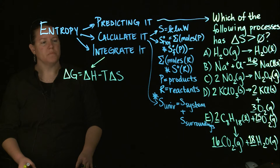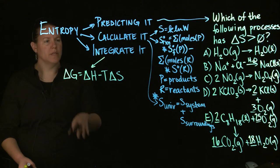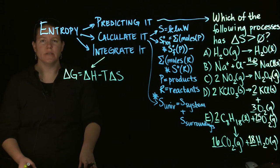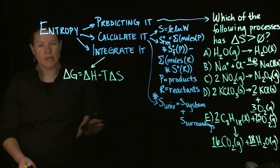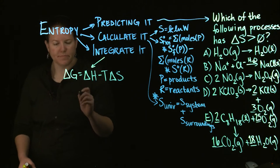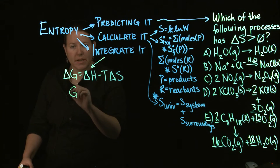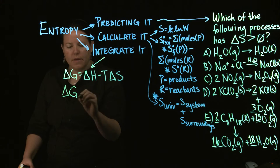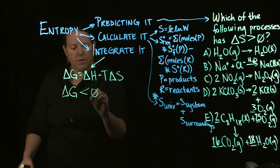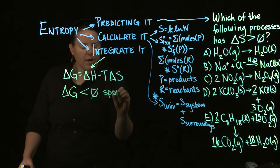It can be at standard conditions or it cannot. That's the most common way we integrate S, because what we're really interested in in this chapter is G. G is our ultimate idea of whether something is spontaneous or not. And if delta G is less than zero, then our reaction is spontaneous.